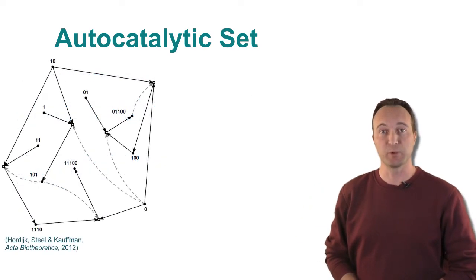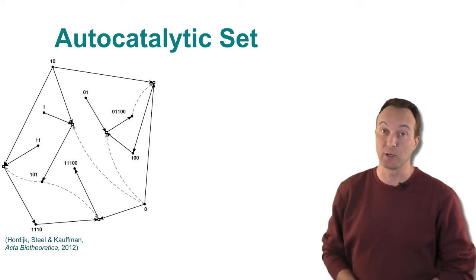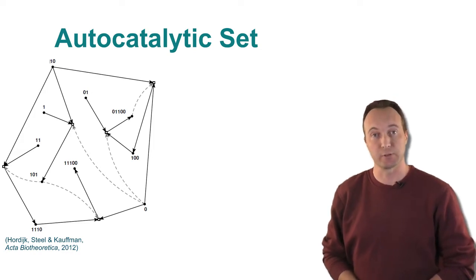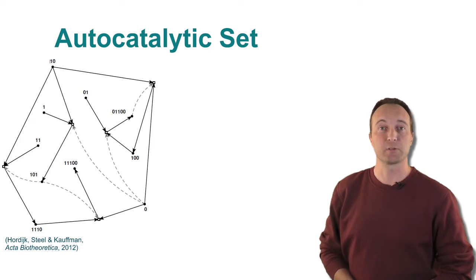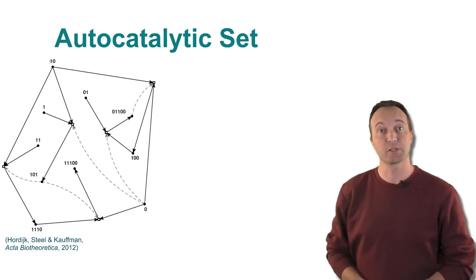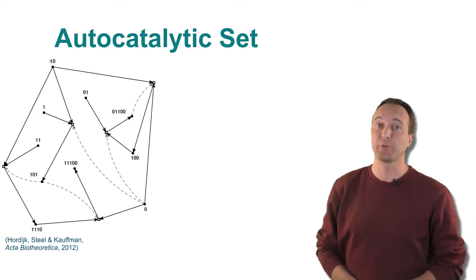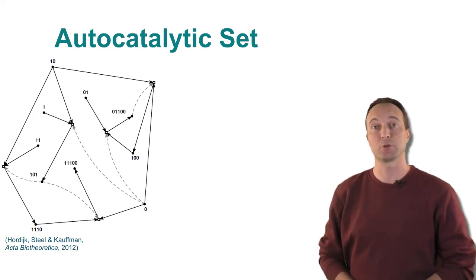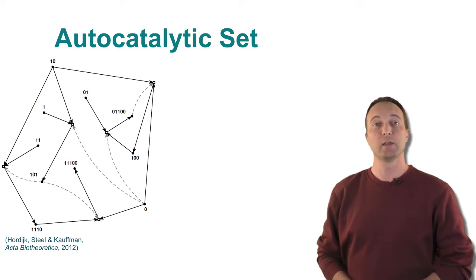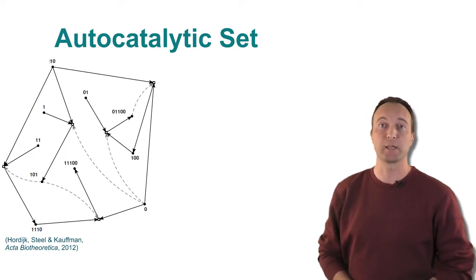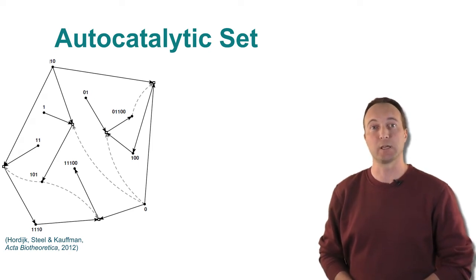This figure shows a simple example of an autocatalytic set formed by a reaction network where the molecule types, the black dots, are represented by bitstrings, that is, strings of zeros and ones. The food source consists of the monomers and dimers, or bitstrings of length one and two. The longer molecules can be built up through ligation reactions, the white boxes, between two shorter bitstrings. Solid black arrows indicate reactants going into and products coming out of a ligation reaction, and dashed arrows indicate which molecules catalyze which reactions.